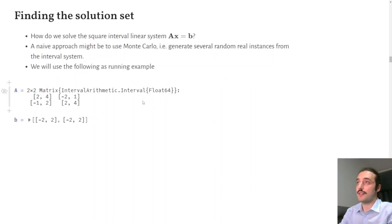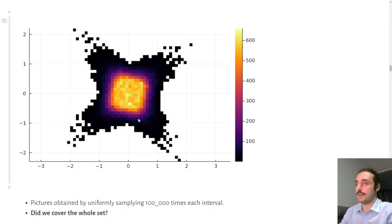But how do we find this solution set? A first naive approach might be to use Monte Carlo. So we sample each interval in the matrix and in the vector. And now we try it with this simple 2D example. And that's the distribution that we get. We have this star-looking shape. We see that the solutions are not uniformly distributed. They are mostly close to the origin. But the question is, did we get the whole set or are we missing some pieces?